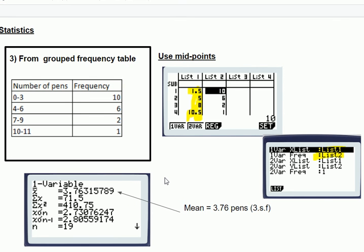So, just a quick summary. When using a group frequency table, make sure you use midpoints. Make sure you set it up for a frequency table, and the mean, as it would be for any type of table or a list, is the X with the little bar over the top.